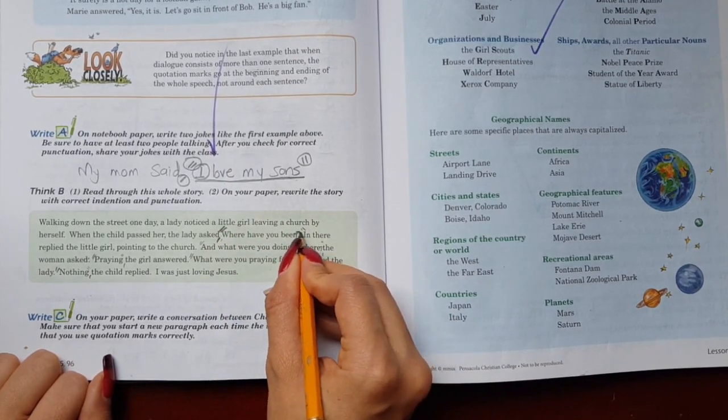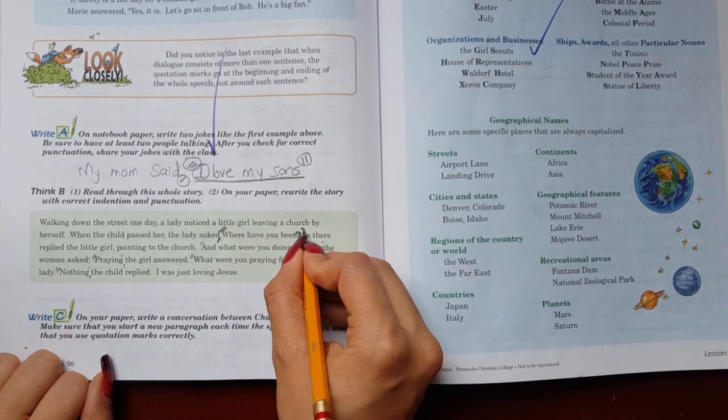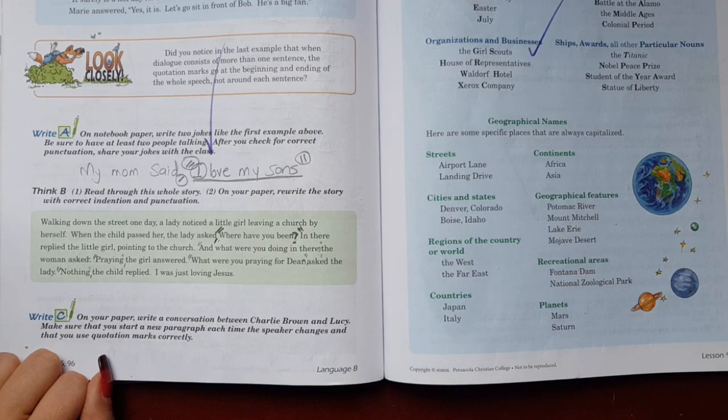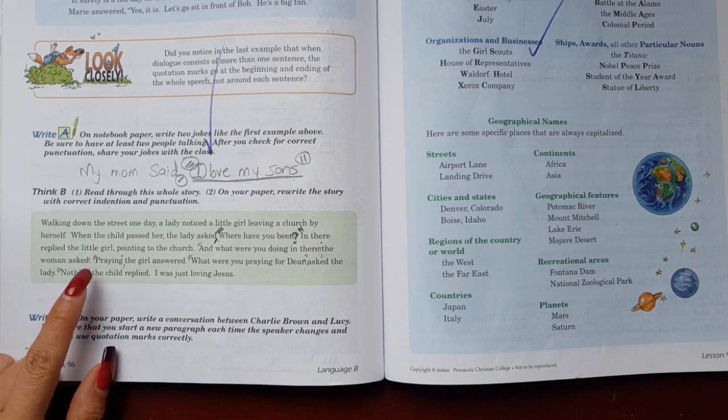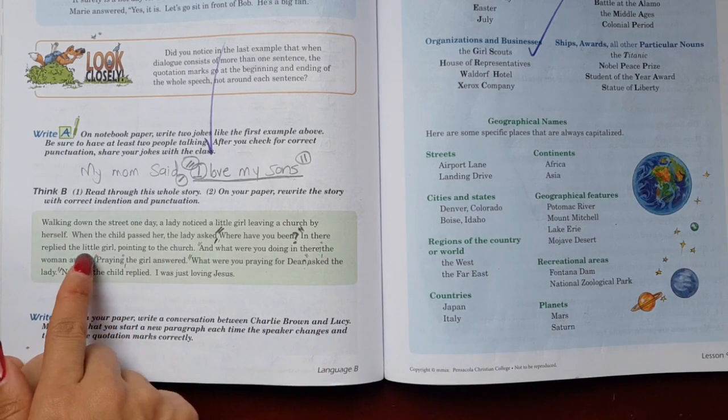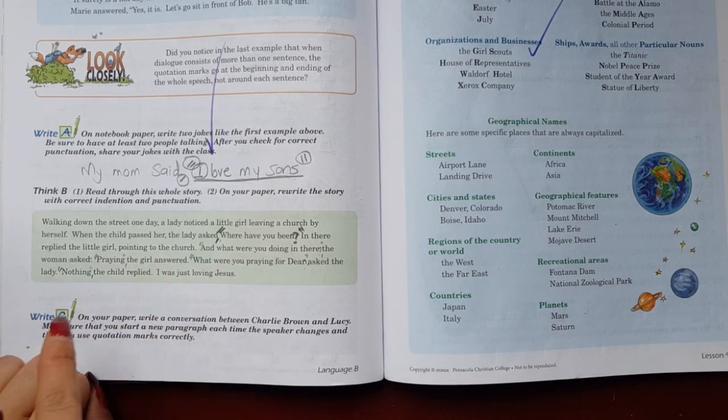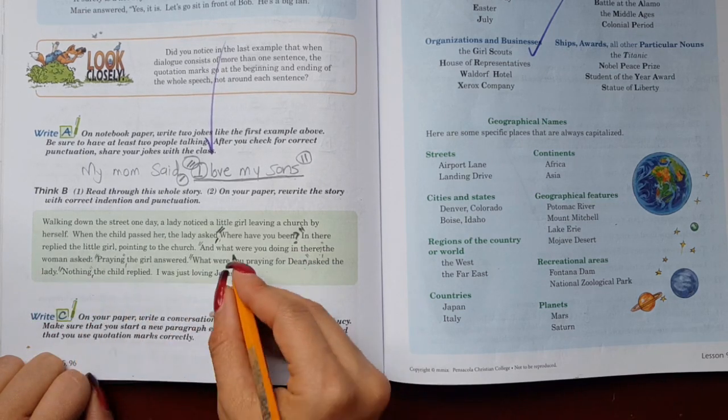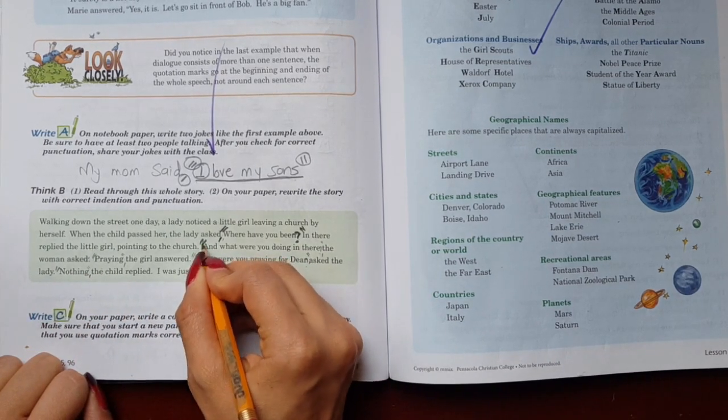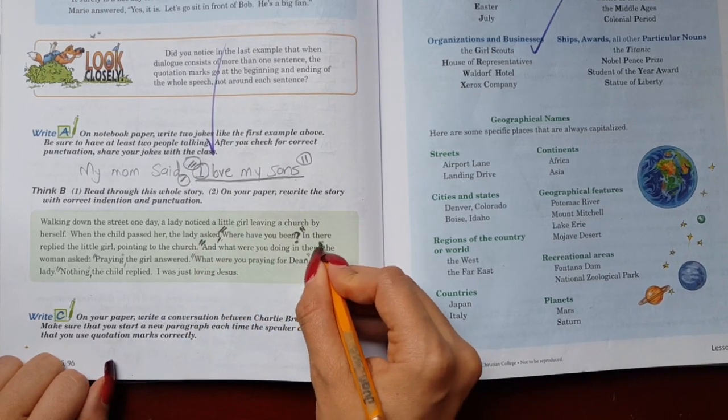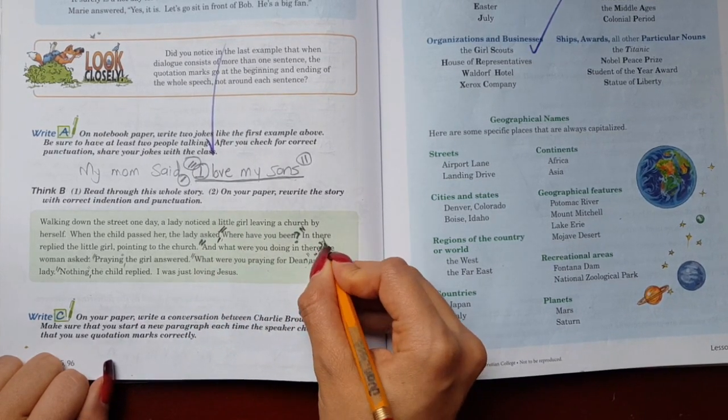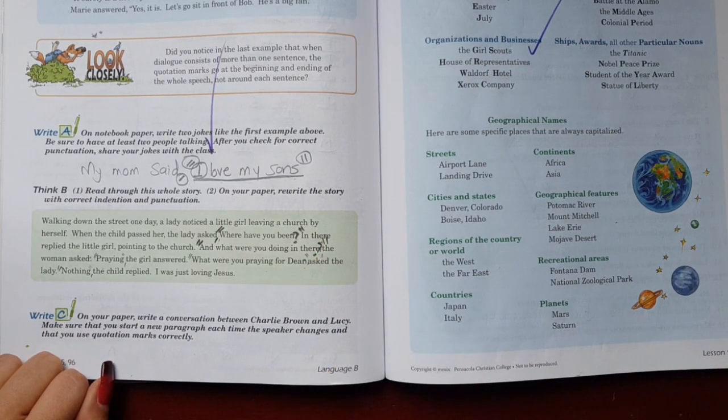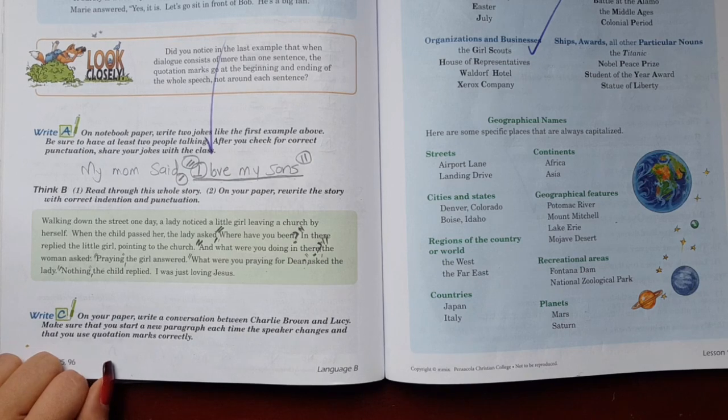The woman asked, that's why we put the comma. Quotation mark, question mark. You see, when it says she asked, well it has to have a question mark. Where have you been? In there, replied the girl. There, said the girl, pointing to the church. And what were you doing in there? The woman asked. What did the woman ask? And what were you doing in there, question mark and quotation mark. The woman asked. Praying, the girl answered.